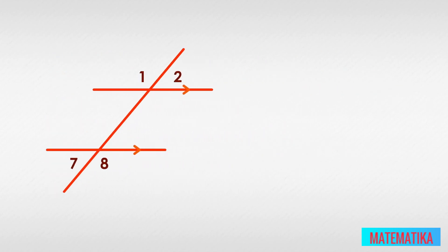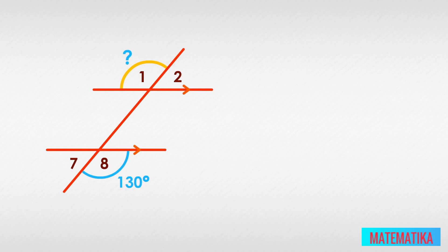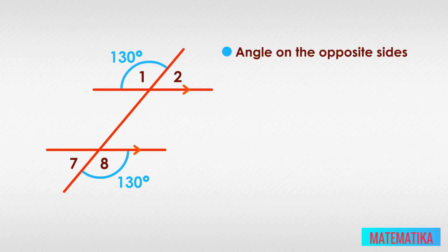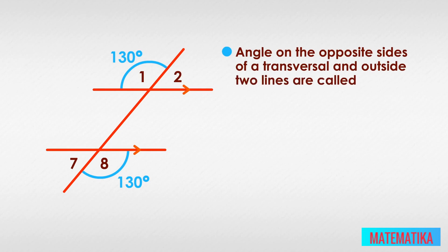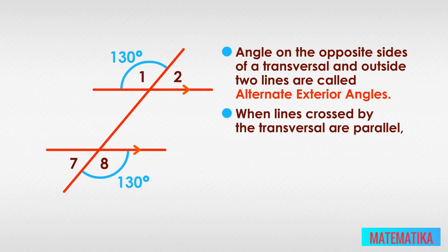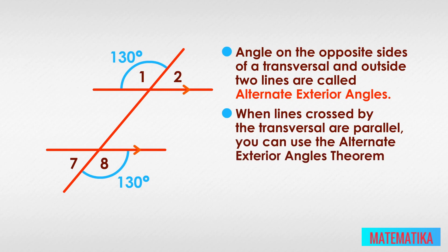Here is a drawing with parallel lines and a transversal. If we know that angle 8 measures 130 degrees, what is the measure of angle 1? Angle 8 is on the outside of the bottom parallel line and to the right of the transversal, which means angle 1 is its alternate exterior angle partner. So the Alternate Exterior Angles Theorem tells us that angle 1 is also 130 degrees. That's all there is to it. Now you know that angles on the opposite sides of a transversal and outside two lines are called alternate exterior angles, and that when lines crossed by the transversal are parallel, you can use the Alternate Exterior Angles Theorem to know the alternate exterior angles are congruent.